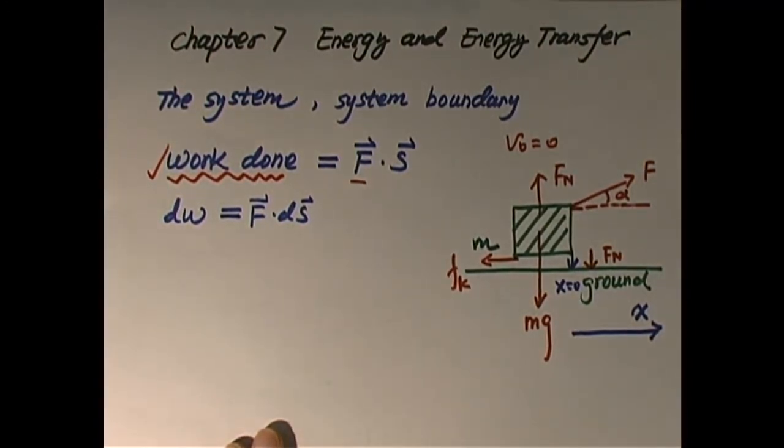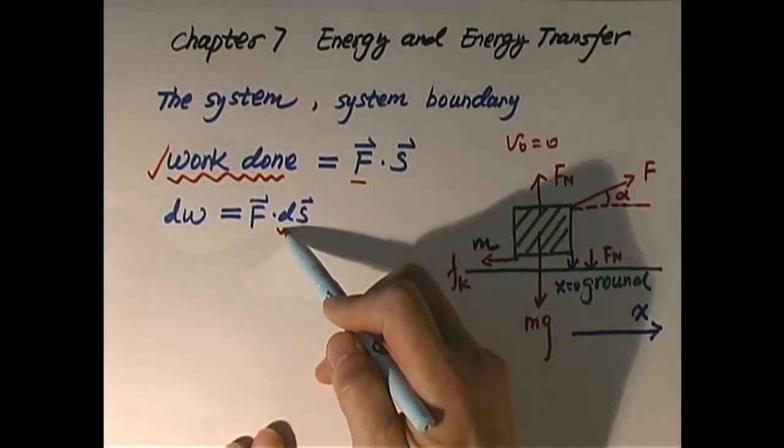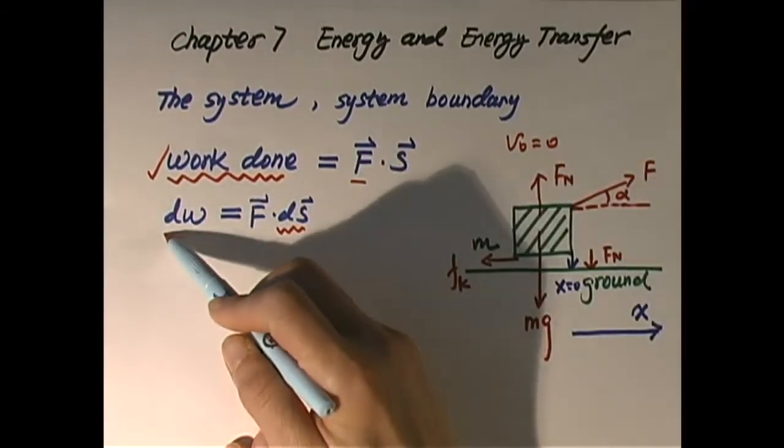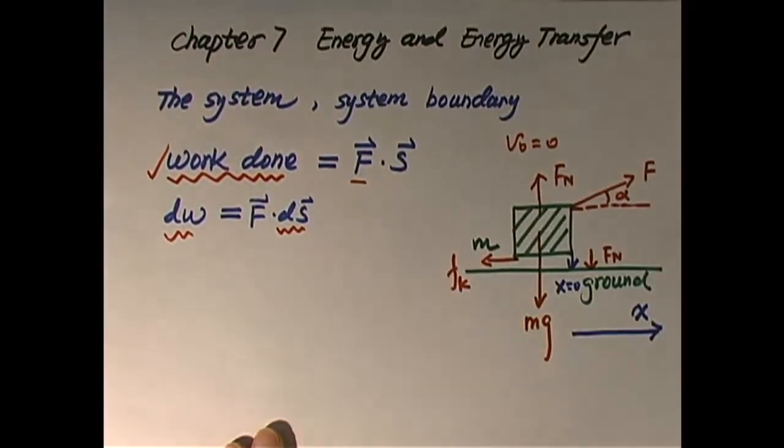And later we will learn that when a vector crosses a vector, the result will be another vector. So here, chapter 7, when we learn two vectors times each other, we call it dot product, the result is a scalar. If the block moves a little distance ds, then that little amount of work done equals F·ds.